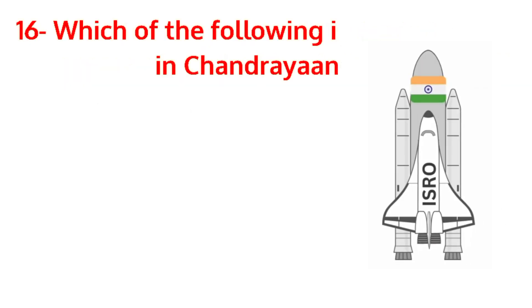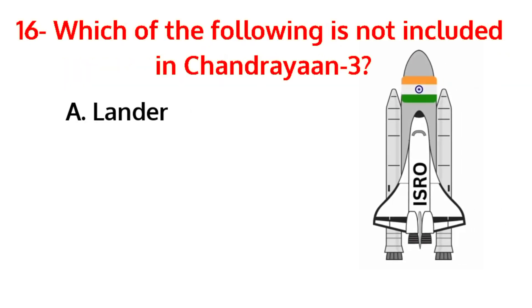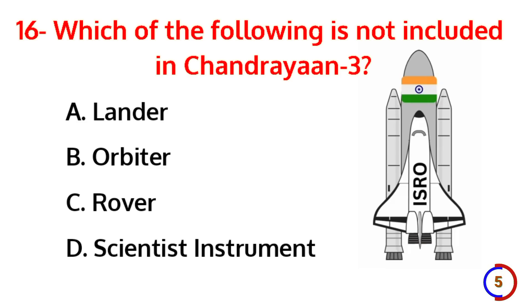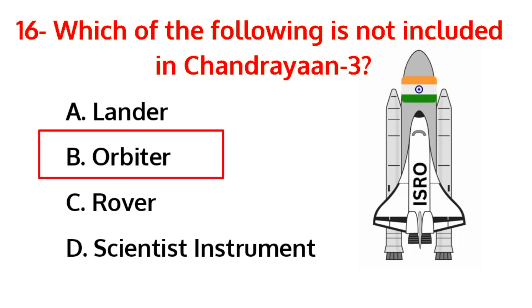Which of the following is not included in Chandrayaan-3? The correct answer is option B, orbiter.